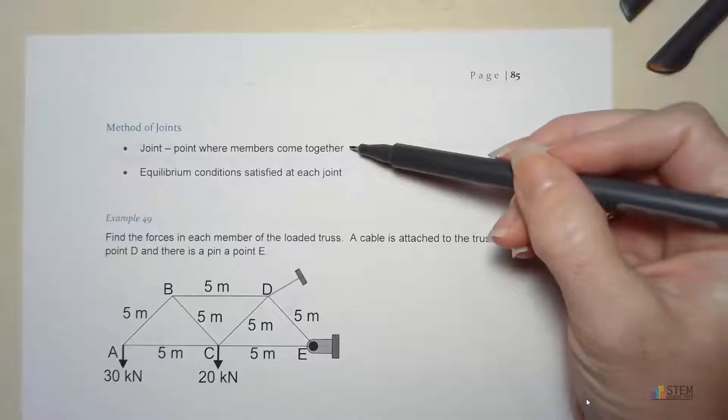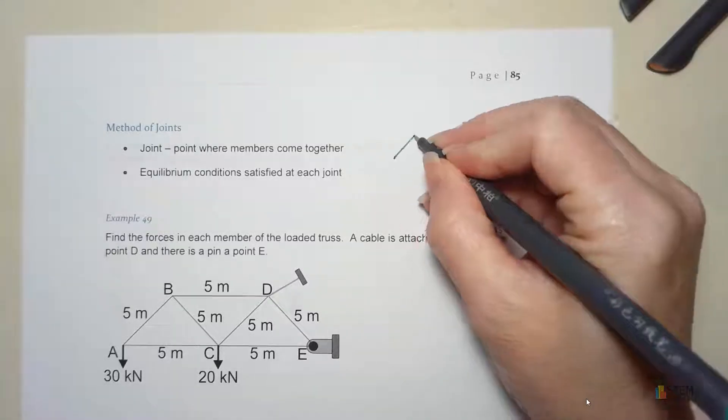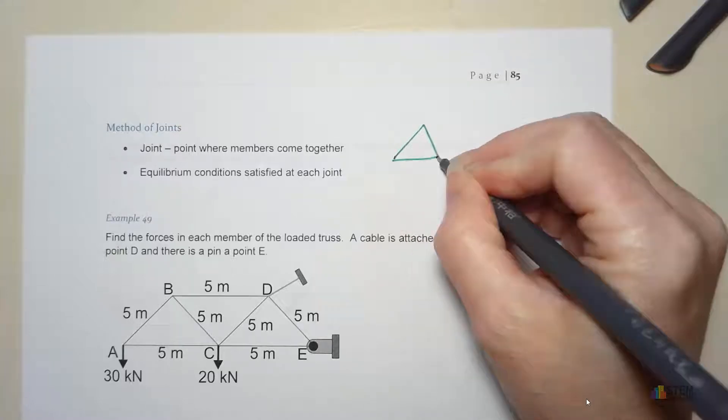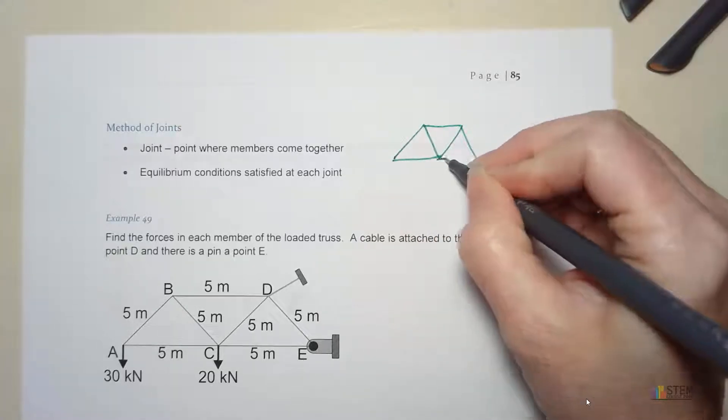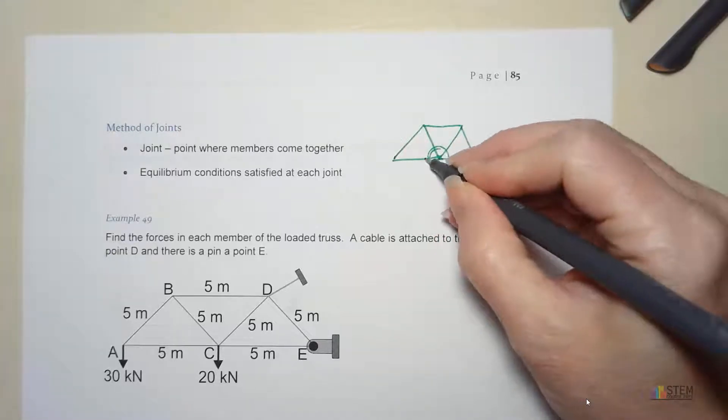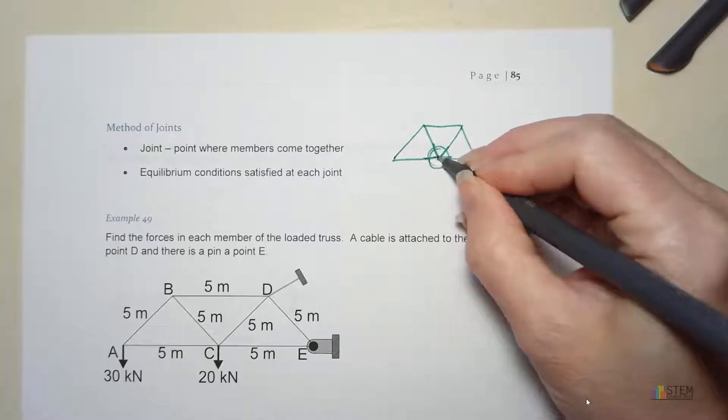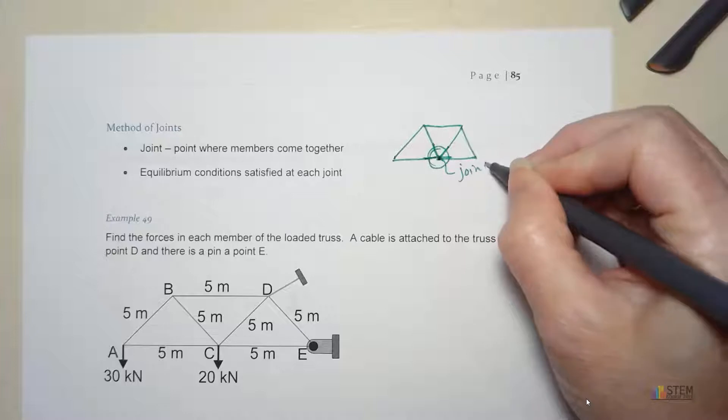So first let's talk about what a joint is. A joint is going to be where our members come together. So if I have something that looks like this, let's look at this piece right here. So if you look, I've got four members right here. They're all coming together at this one point. That would be a joint.